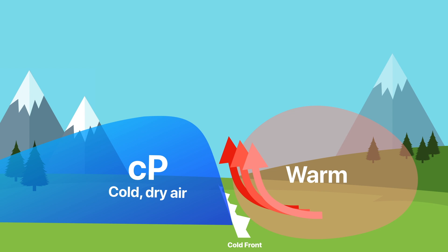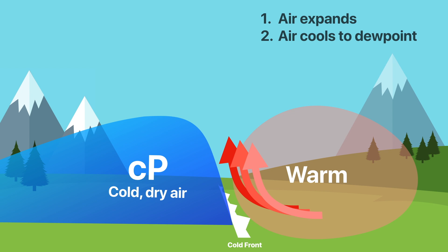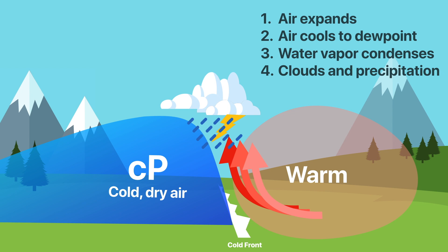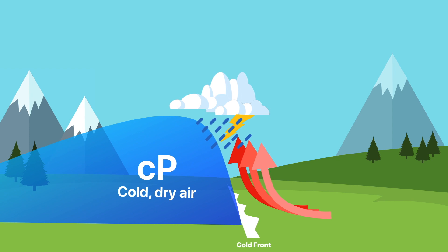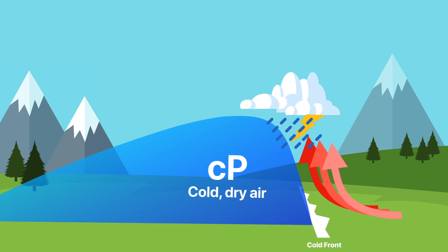And what happens when air rises? It expands and spreads out, which causes it to cool down, eventually reaching its dew point — the temperature at which it's holding all of the water vapor that it can. After that point, the water vapor has nowhere to go, so it condenses. And that forms clouds, rain, and other precipitation. That's going to follow our front no matter where it goes.